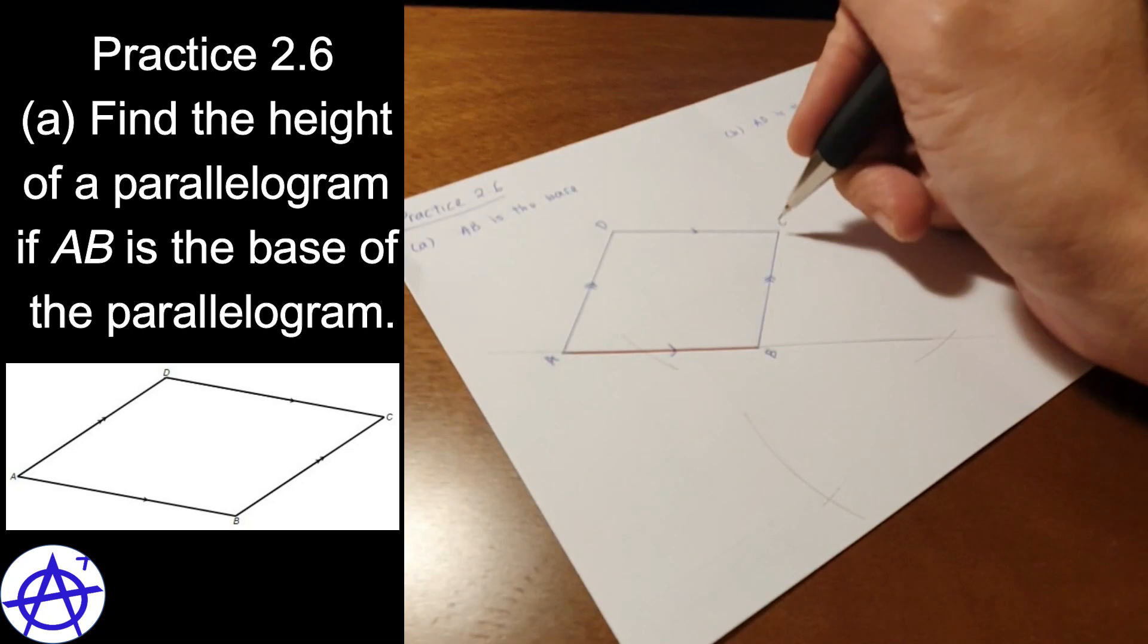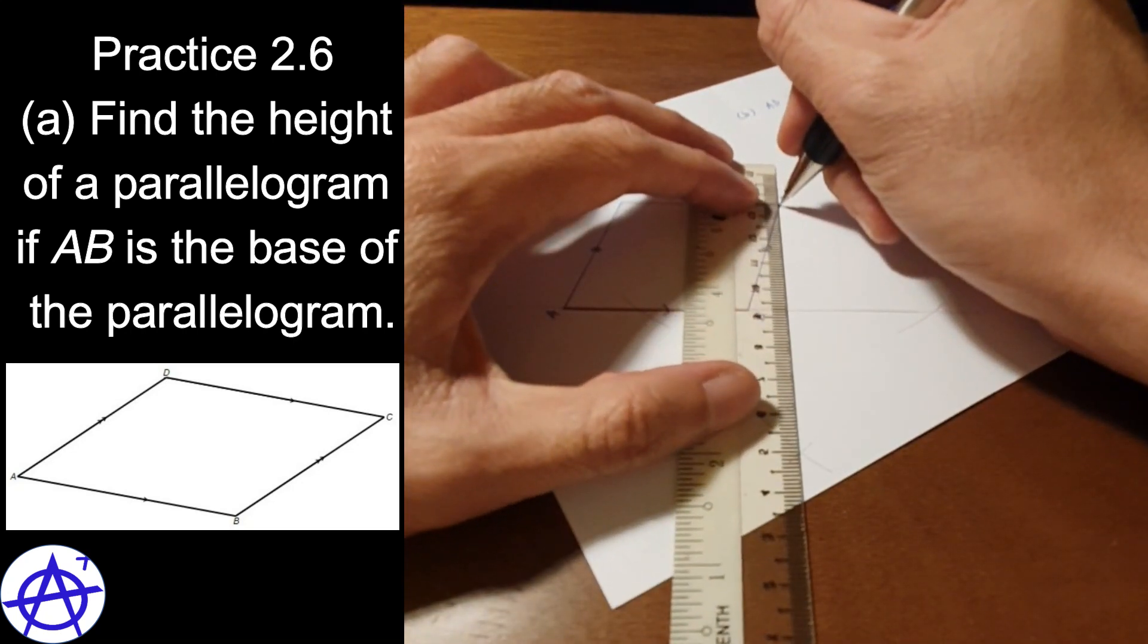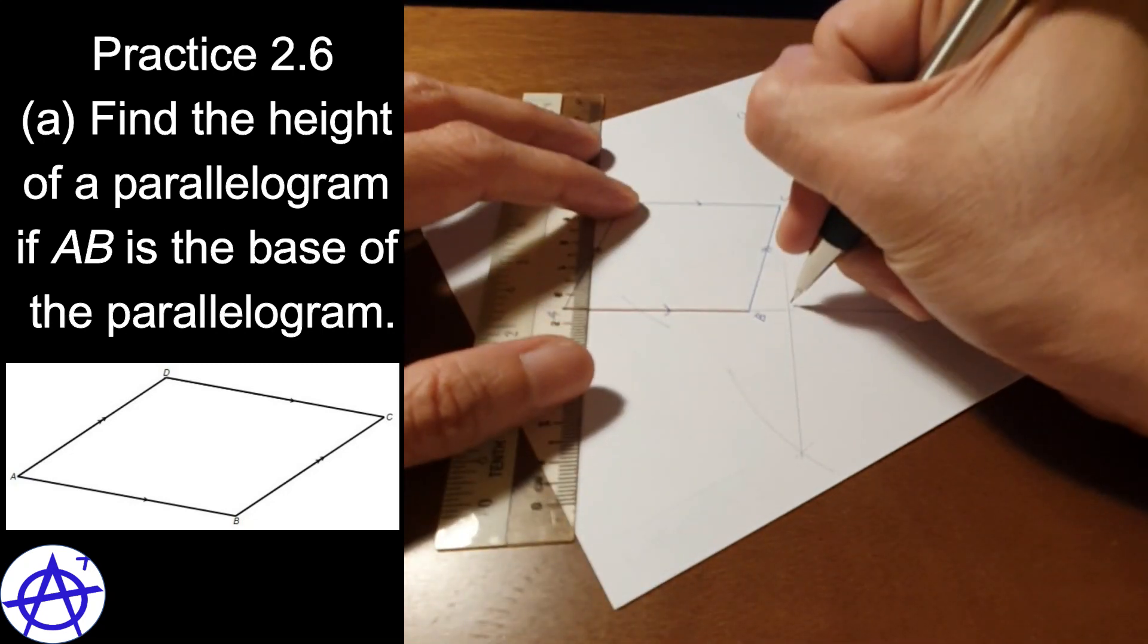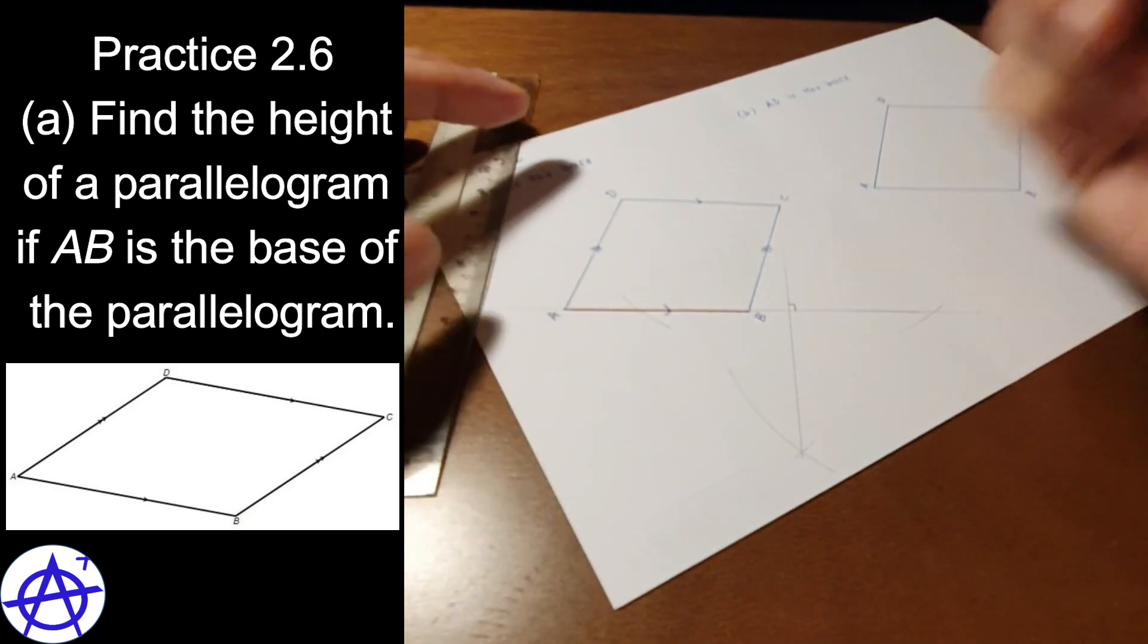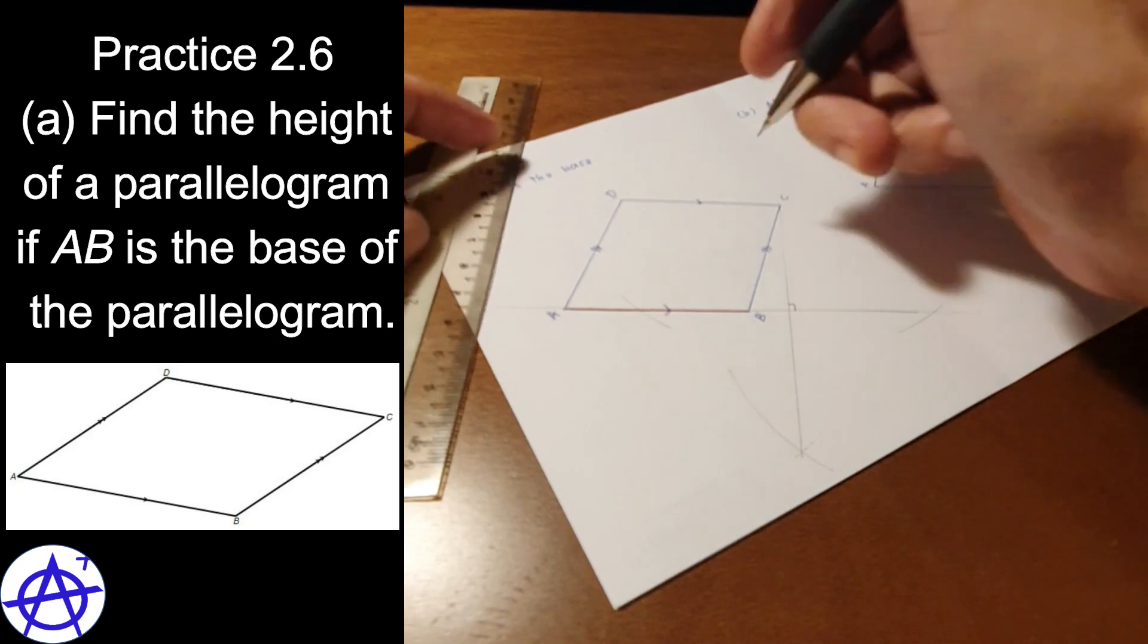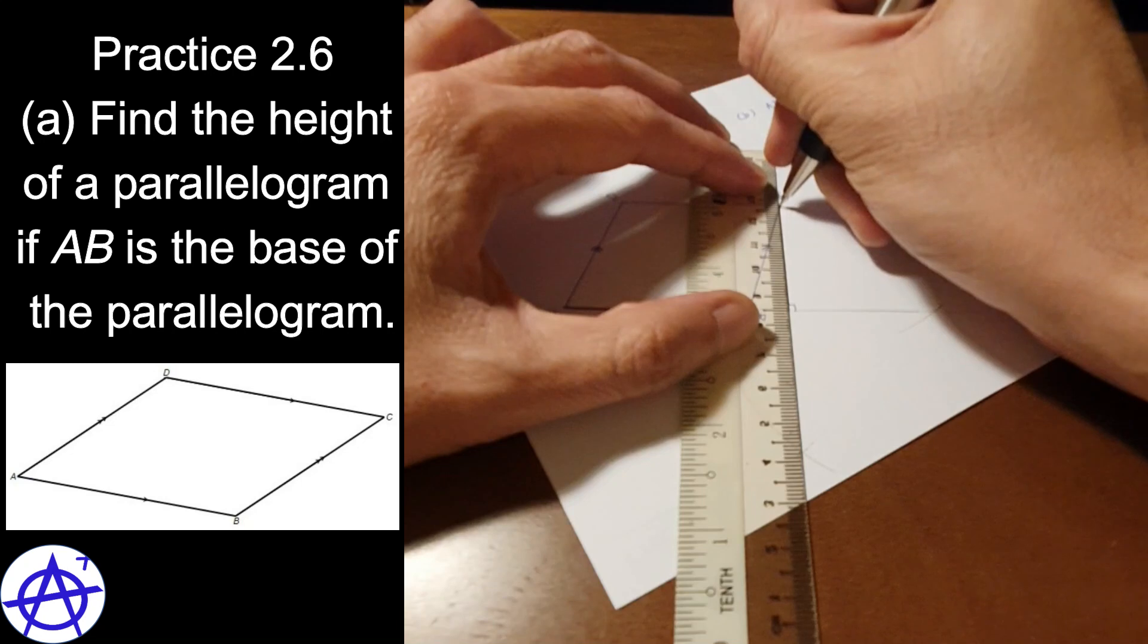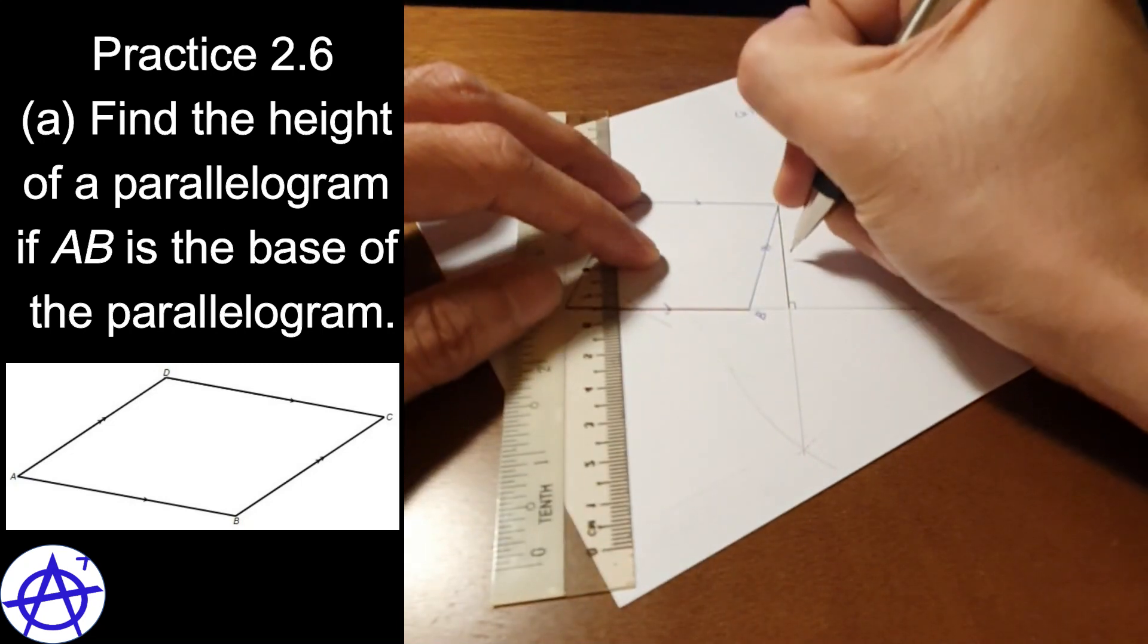Okay then, from this point C, I join to this point of intersection. So I know that this line is perpendicular to the line AB. What does it mean here? It means that the height of this parallelogram is here. So this is the height.